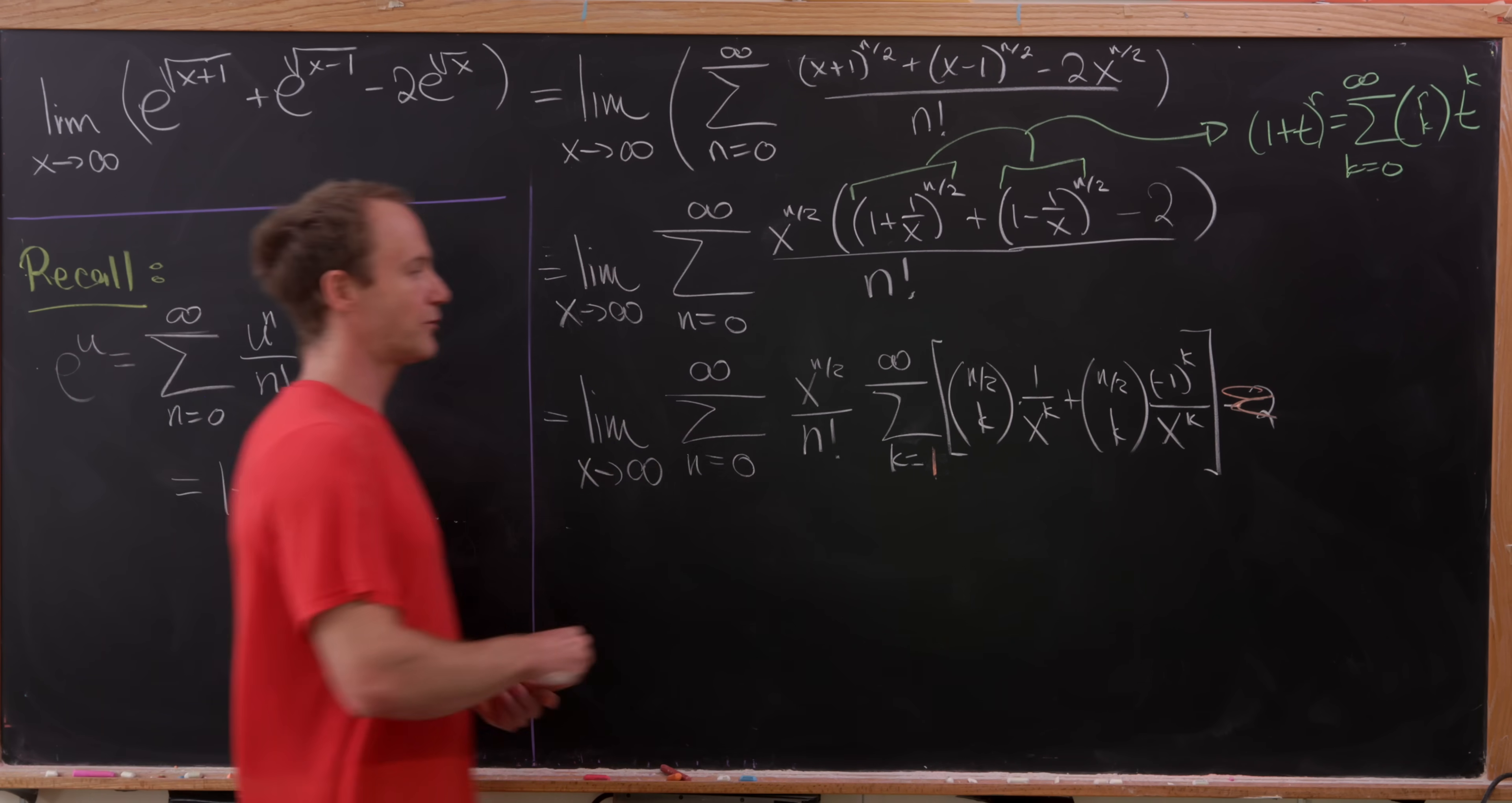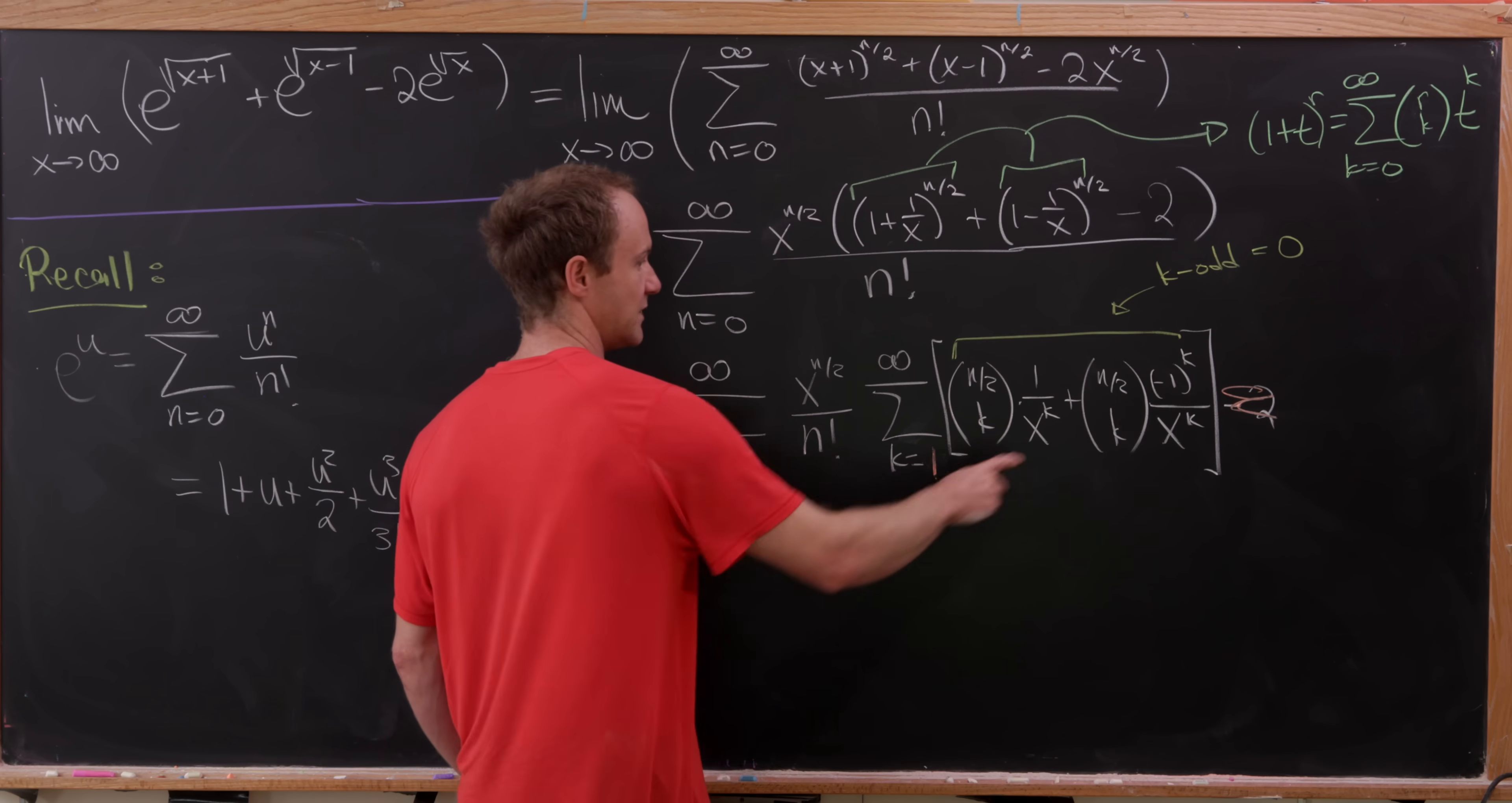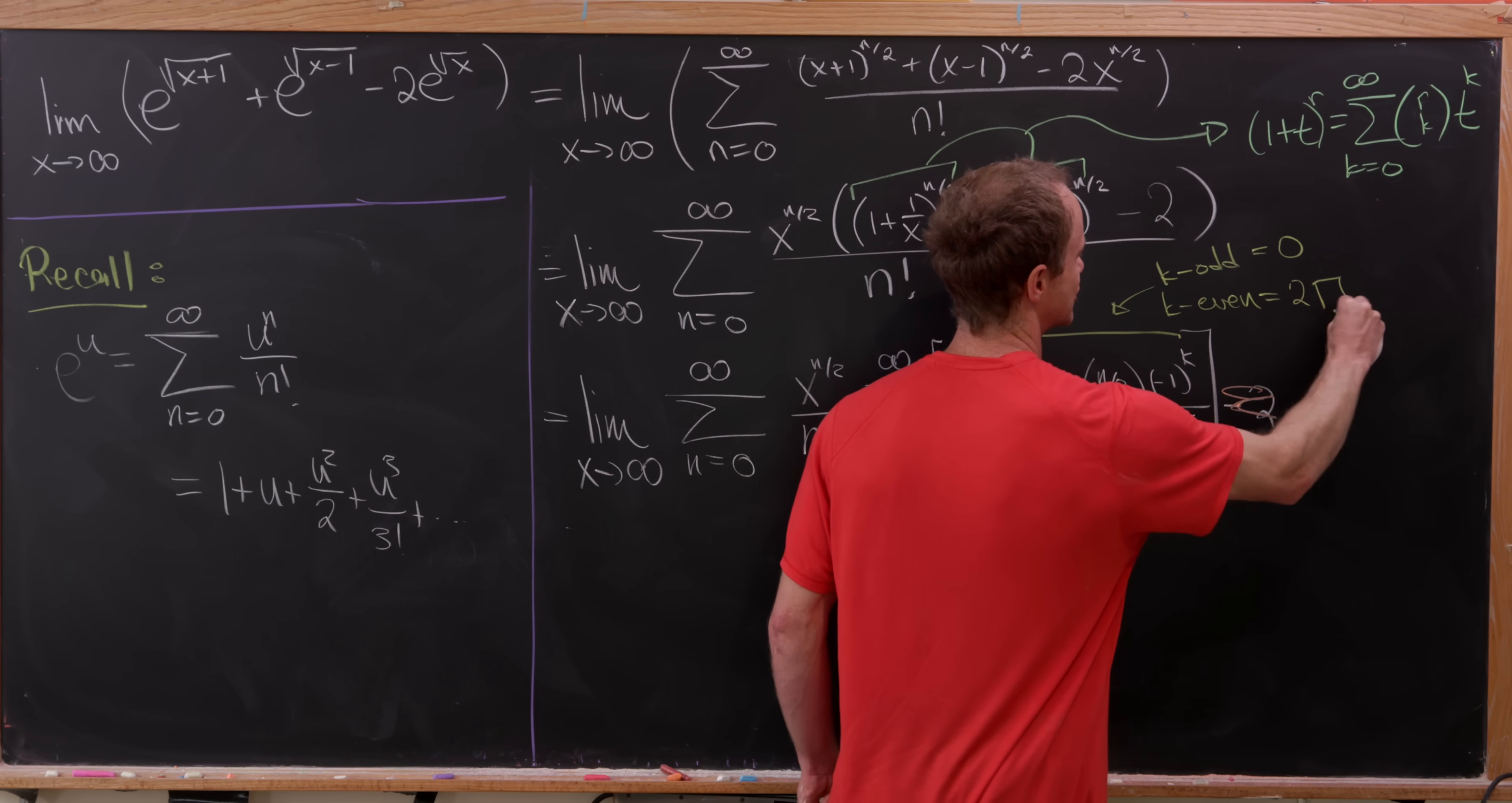And then next we can make a pretty nice observation. And that is, if k is odd, this whole thing equals 0 because it's alternating, but notice has everything else the same. And then if k is even, then this whole thing is equal to 2.